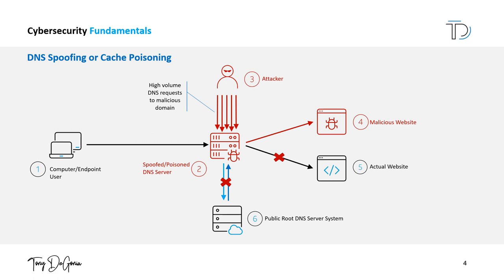Preventing DNS spoofing or cache poisoning requires proper configuration and maintenance of DNS servers, including implementing security measures such as DNSSEC, which is a set of extensions to DNS that provide DNS clients with origin authentication of DNS data, data integrity, and authenticated denial of existence. It also requires ensuring that software is up to date and monitoring for suspicious activity.